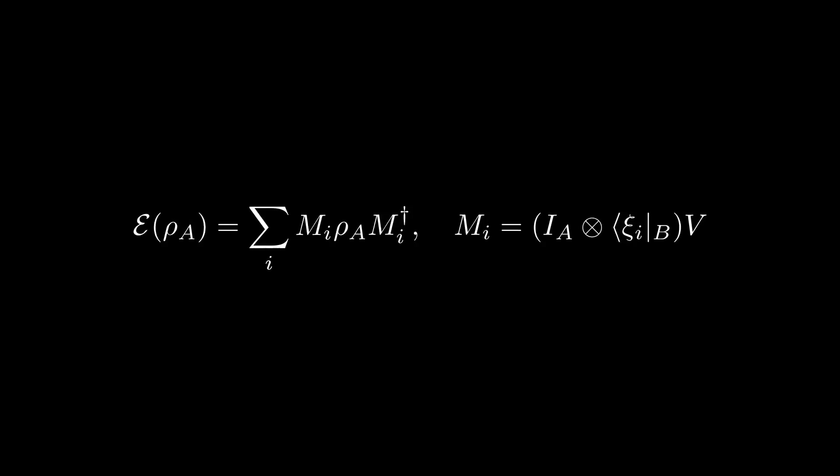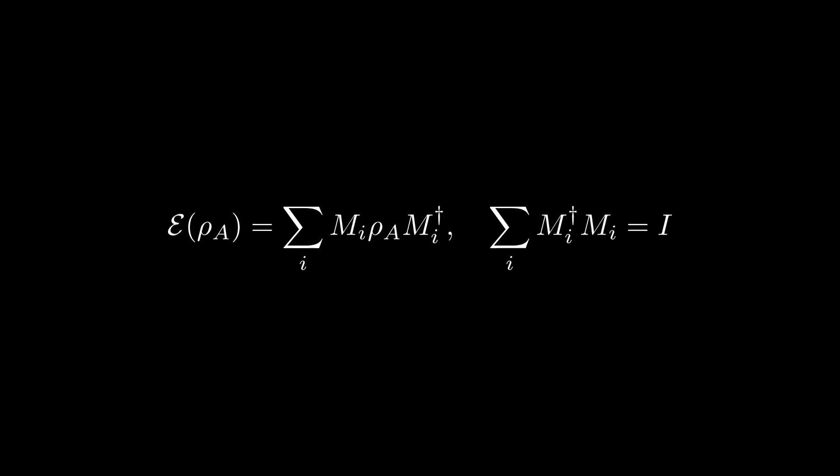Furthermore, if we take the full trace of both sides, we can also use cyclicity of trace to get that the expected value of the sum of M_i dagger M_i must be one for all choices of ρ. The only way this can happen is if this sum is the identity. Consequently, we have the following operator decomposition of the quantum channel with the following normalization condition.